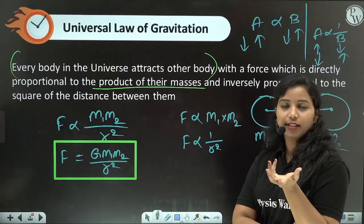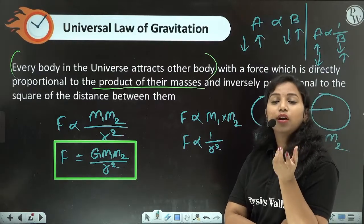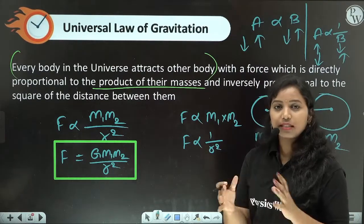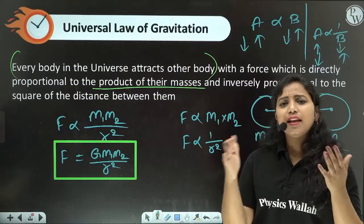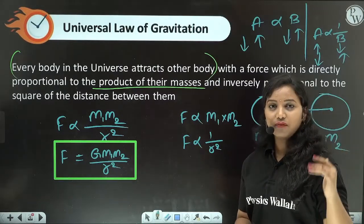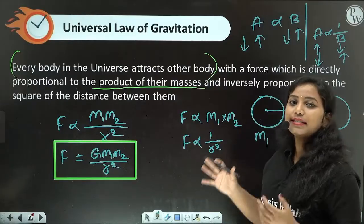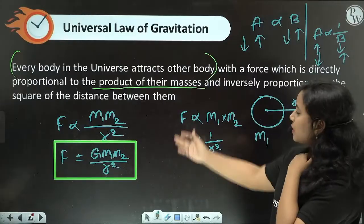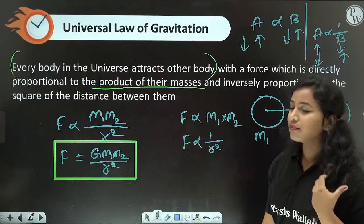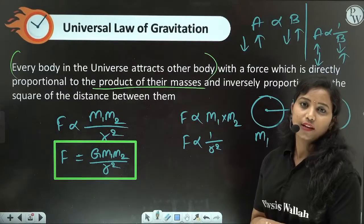The force of attraction is directly proportional to the product of masses and inversely proportional to the square of the distance. Using this statement, we get the formula: F is equals to G into M1 M2 by R squared.